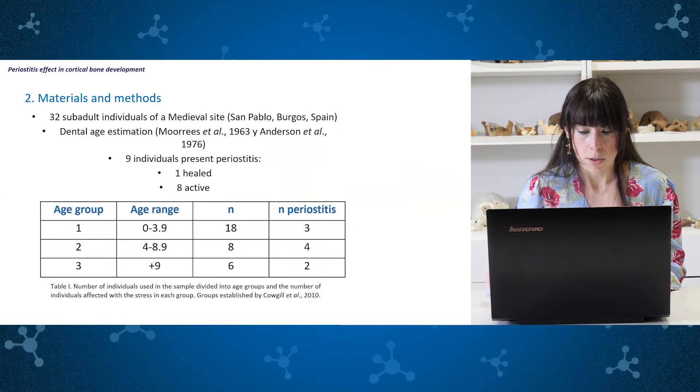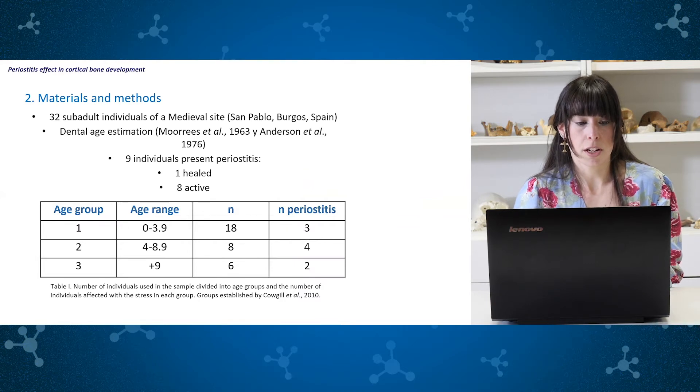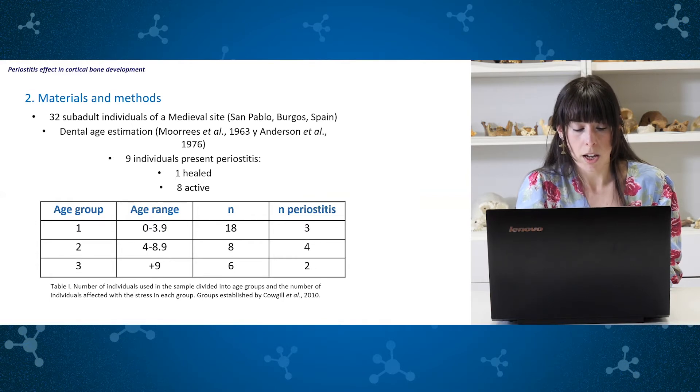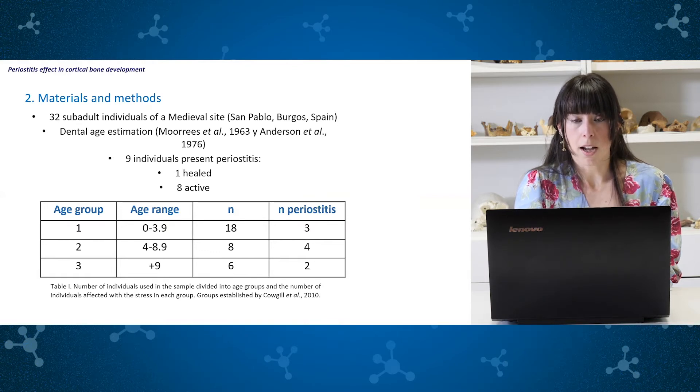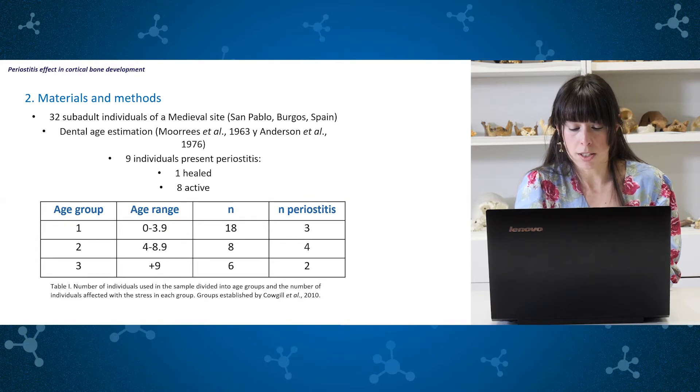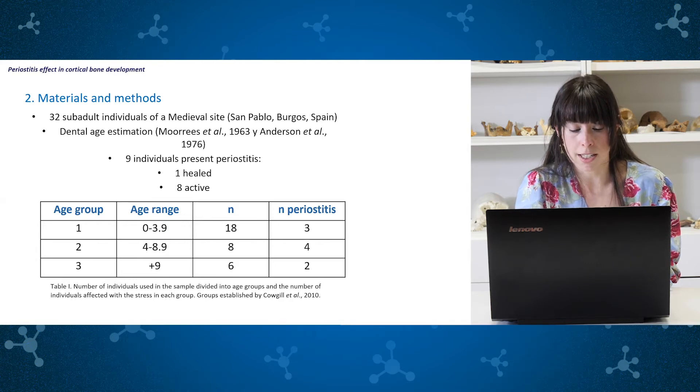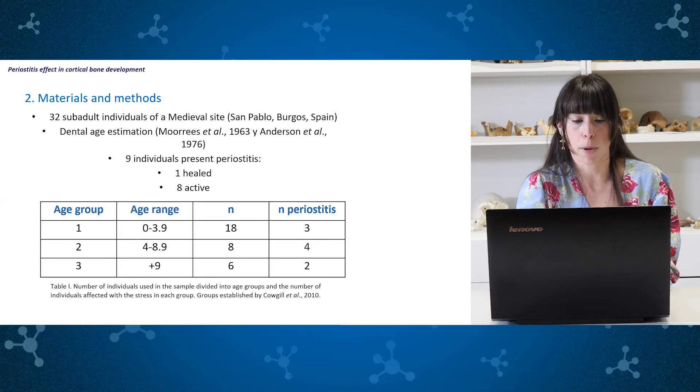For that purpose, we have studied cross sectional features of 32 subadult femora of the medieval population of San Pablo in Burgos, Spain. Sample range in dental age from neonatal to 16 years old and dental age was estimated by the development of roots and dental crowns. Nine of the 32 individuals present active or healed or healing periostitis. Analysis focused on immature individuals because bone is most sensitive to intrinsic and extrinsic inputs during growth and are the most affected by periostitis in the whole population.